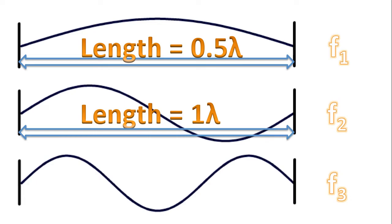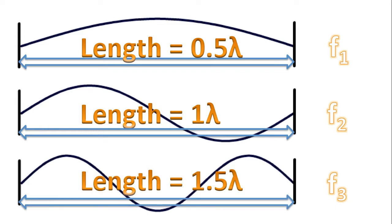For the second harmonic, f2, the length is exactly one wavelength. For the third harmonic, f3, the length is exactly 1.5 wavelengths. And you can see a pattern here. As the frequency increases, the harmonic frequency that is, the number of wavelengths also increases.